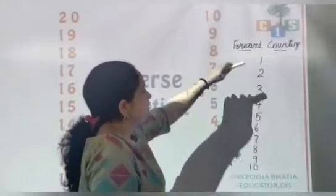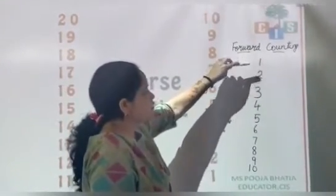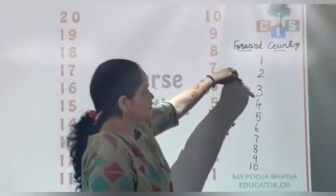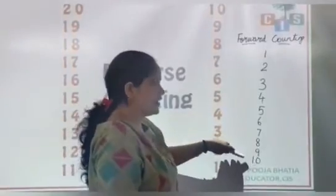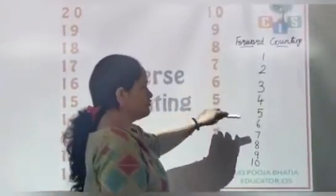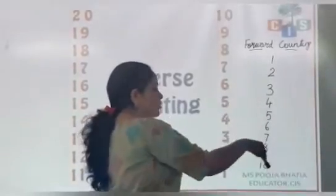Do you remember all that we have started with 1? Then what is bigger than 1? 2. Then 3, 4, 5, 6, 7, 8, 9, and 10. This is forward counting. Right? So what will be the backward counting?